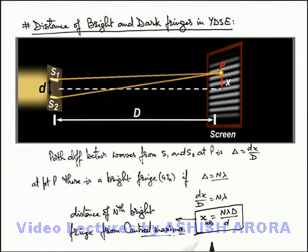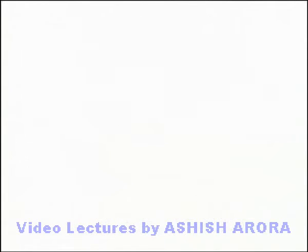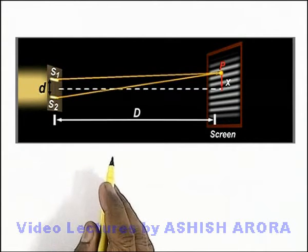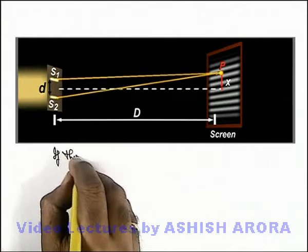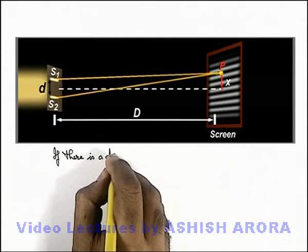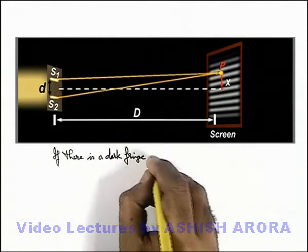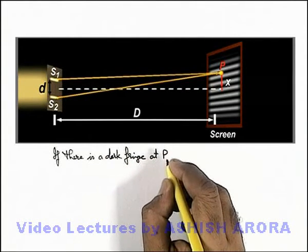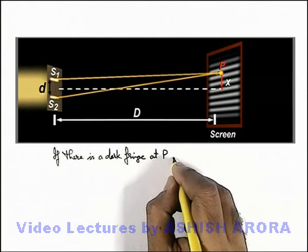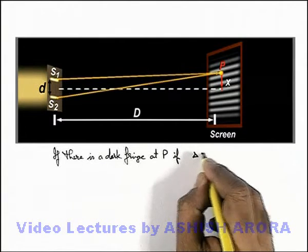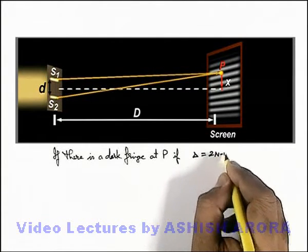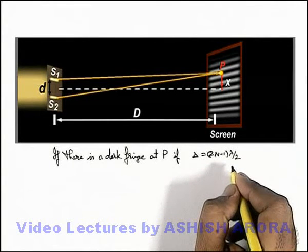Let's continue to obtain the distance of the dark fringe from the central maxima. Here you can see the same picture from the previous sheet. If there is a dark fringe at point P, then this will happen if the path difference between the two waves at point P is equal to (2n−1)λ/2, that is an odd multiple of λ/2.